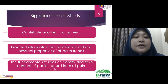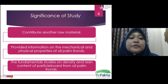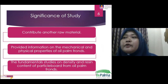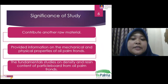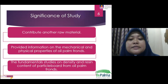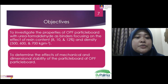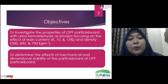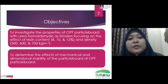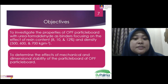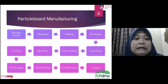The significance of the study is, first, to contribute another raw material by searching for an alternative. Second, to provide information on the mechanical and physical properties of the oil palm plant. Third, as a fundamental study on the density and resin content of a particle board from the oil palm frond. The objective is to investigate the properties of the OPS particle board with urea formaldehyde as the binder, focusing on resin content of 8%, 10%, and 12%, and density of 500, 600, and 700 kg/m³. The second objective is to determine the effects on mechanical and dimensional stability of the OPS particle board.